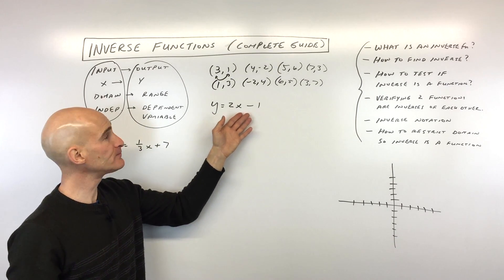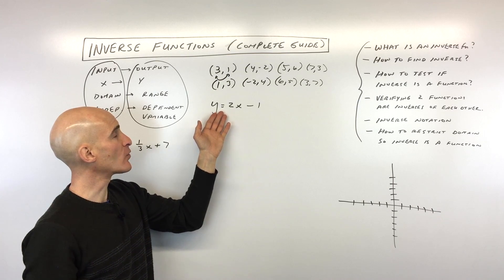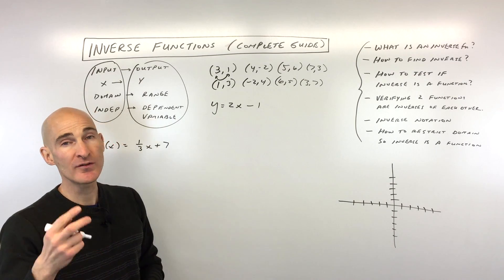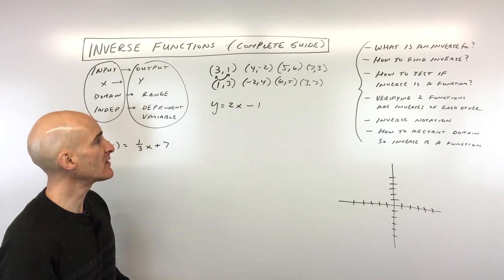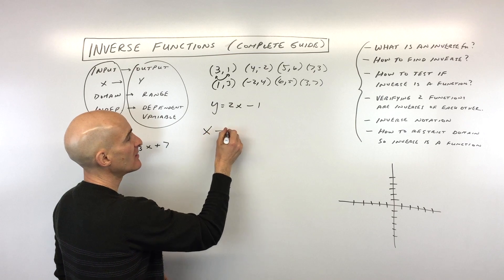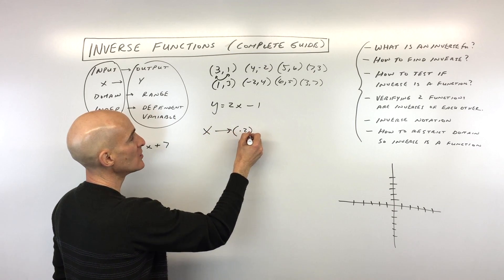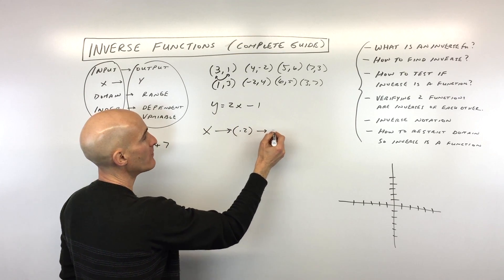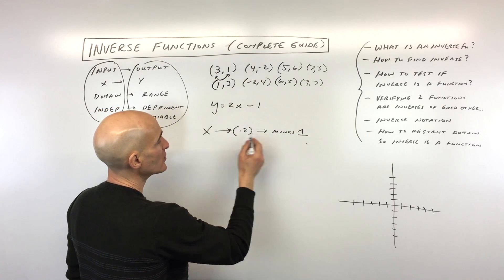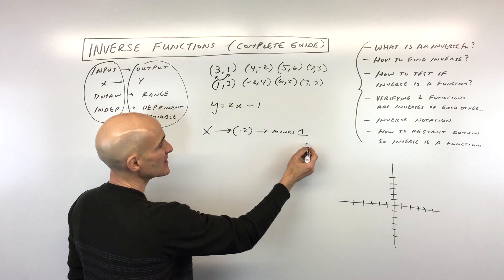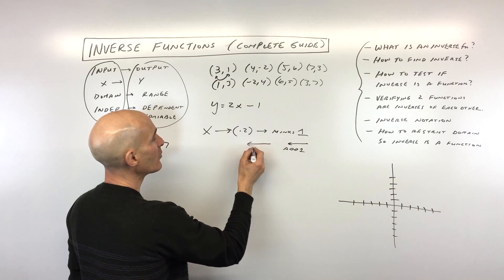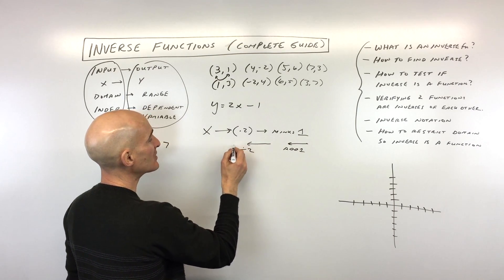A more challenging example: say they give us the equation y equals 2x minus 1 and ask for the inverse. There are two ways to approach this. The intuitive way: when you put x in, you multiply by two, then subtract one. If you want to reverse this process, you go from right to left — instead of subtracting one you add one, and instead of multiplying by two you divide by two.